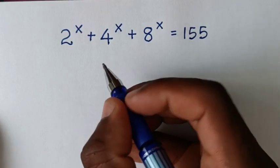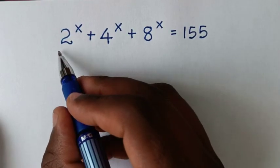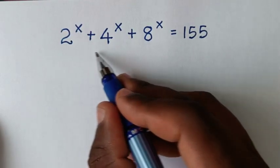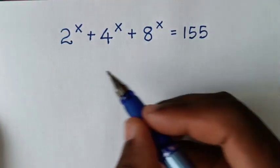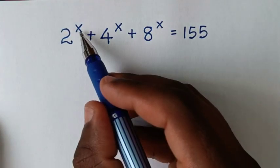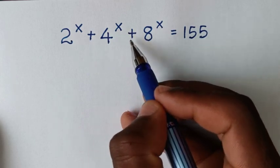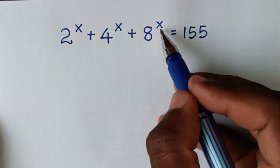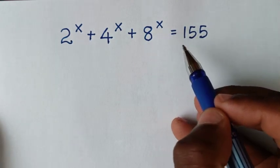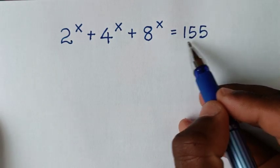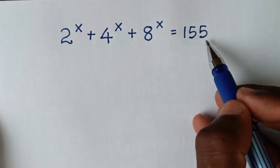Hello, you are welcome to solve this math problem, which is 2^x plus 4^x plus 8^x is equal to 155.